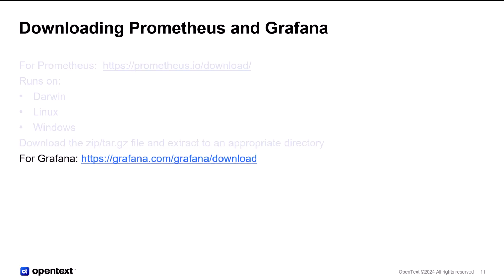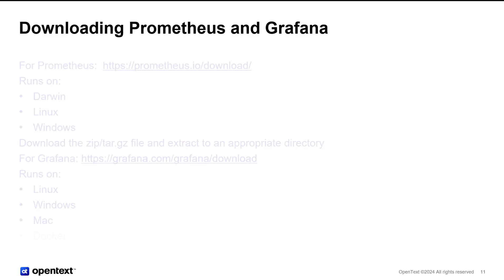For Grafana, you can go to grafana.com/grafana/download. That runs on Linux, Windows, Mac, Docker, and Linux on ARM.